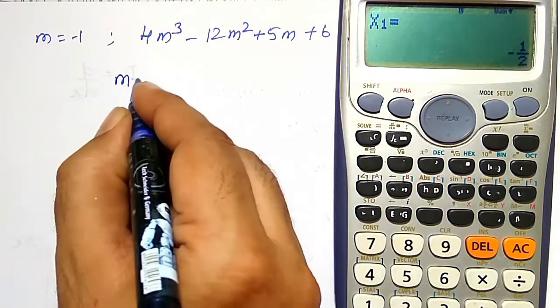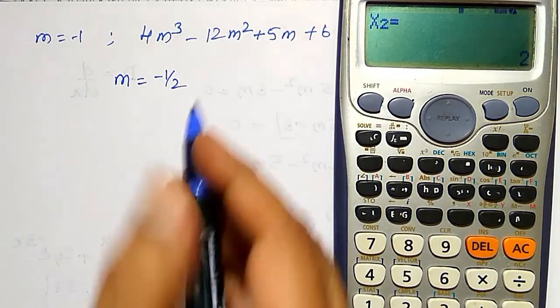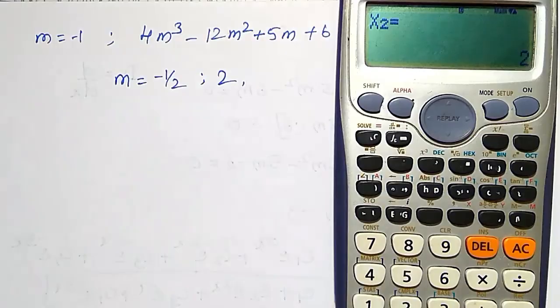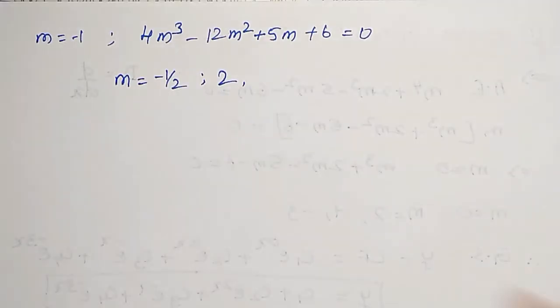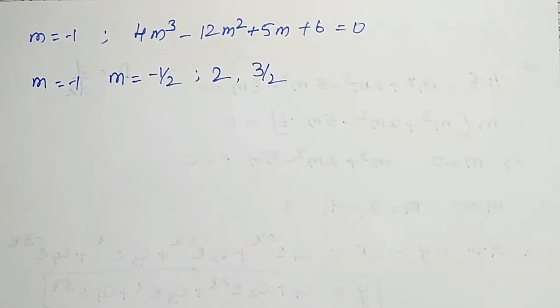Then there is M = -1/2. That is first root. Next root, 2. Another root, 3/2, +3/2. You can just observe here, +3/2. And already M = -1 is there.